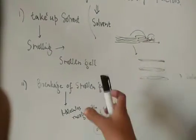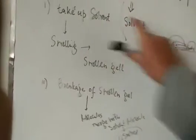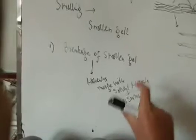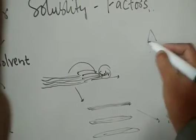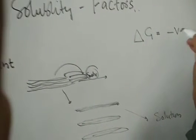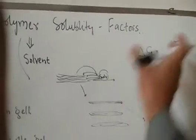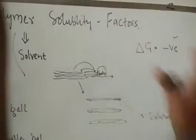We know that any process in the universe is spontaneous only under certain conditions. In this case also, the polymer will get converted to a solution only when the change in free energy — delta G — is negative. That is, a decrease in free energy should take place. This decrease in free energy depends on many factors, which we will now discuss.